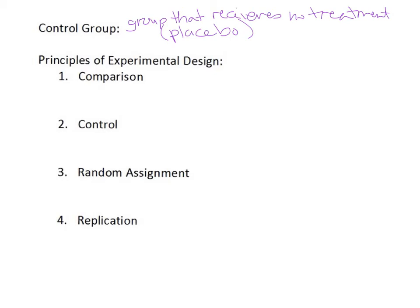The next topic is the principles of experimental design, which help reduce confounding variables. The first principle is comparison: when doing an experiment, you should always have at least two treatments so you can compare them. Otherwise it won't actually be a valid experiment.